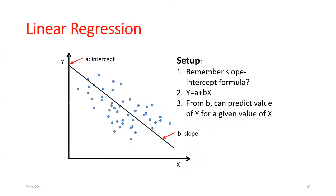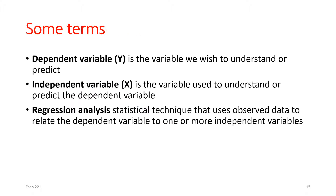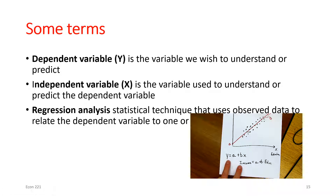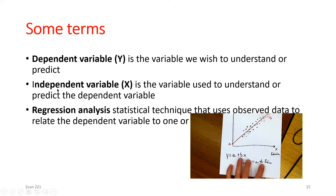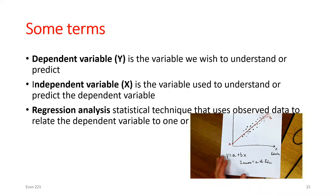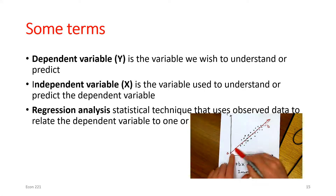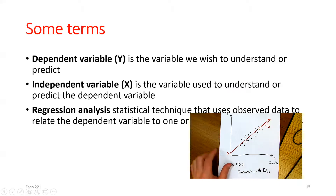A couple of terms before we move further. We're going to call the Y variable, or our left-hand side variable, the dependent variable — it depends on our X variable. Our X variable, or right-hand side variable, is the independent variable — it's what is changing. When it changes independently, the dependent Y variable will then also change as a result. Regression analysis is the tool we'll use to come up with the A and B values that give us this line of best fit.